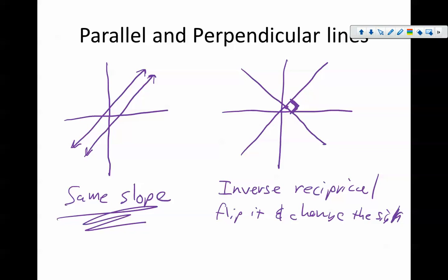Meaning if the slope of one is three halves, the inverse reciprocal is negative two thirds. If the slope of one is two, then the inverse reciprocal is negative one half. We flip it and change the sign. If you calculate the slope of two lines and it turns out that they have this inverse reciprocal relationship, then those two lines are perpendicular.